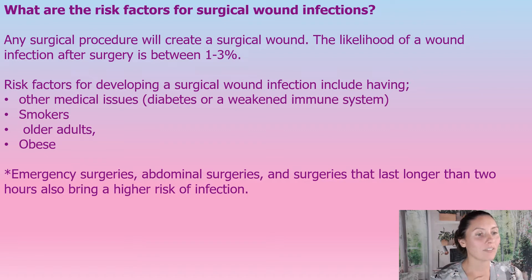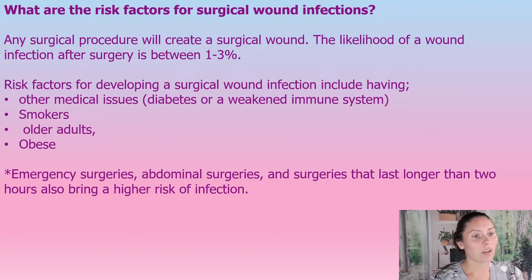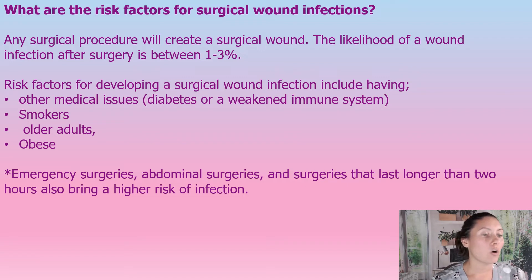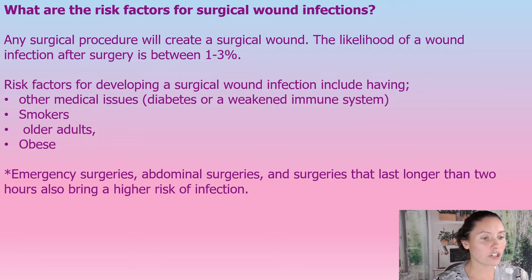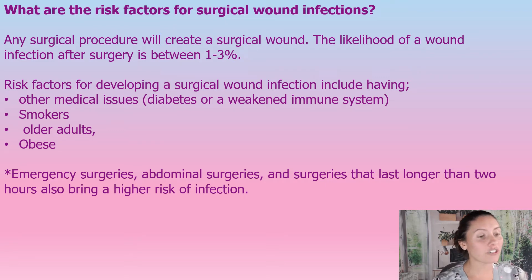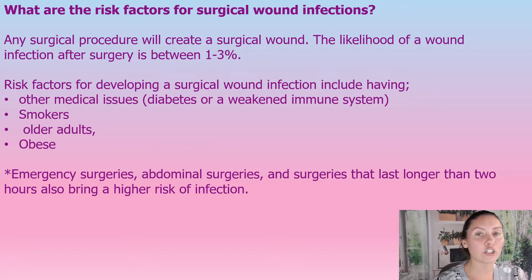Risk factors for surgical wound infections: any surgical procedure that creates a wound or break in the skin barrier is at risk of infection. The likelihood of a wound infection after surgery is between one and three percent — so up to three people for every hundred. Risk factors increase if you have other medical issues such as diabetes or a weakened immune system, if you smoke, if you're an older adult, or if you're obese. Emergency surgeries, abdominal surgeries, and surgeries lasting longer than two hours also carry a higher risk of infection.